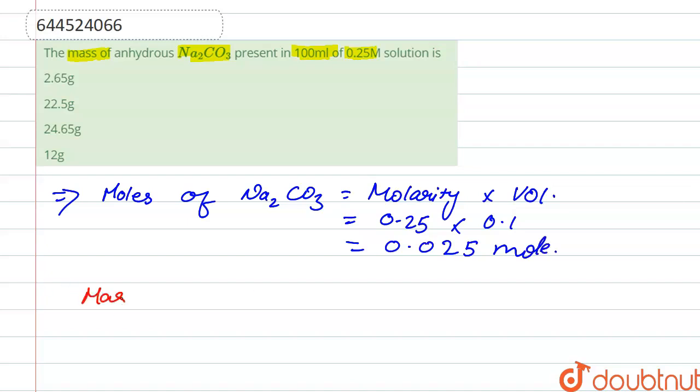Mass of Na2CO3 is number of mole into molar mass. Right, so n is equal to 0.025 into molar mass that is 106 gram per mole, so it comes to 2.65 gram.